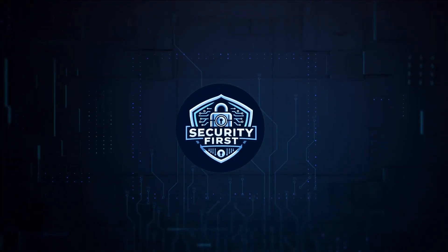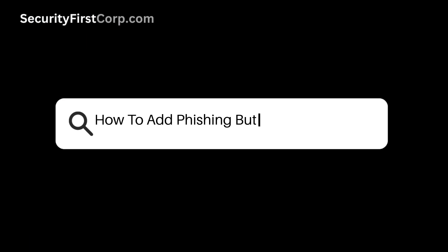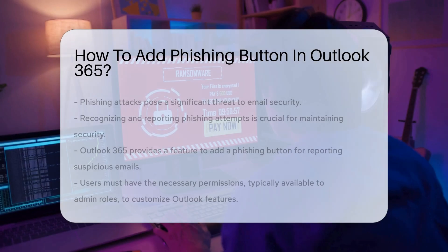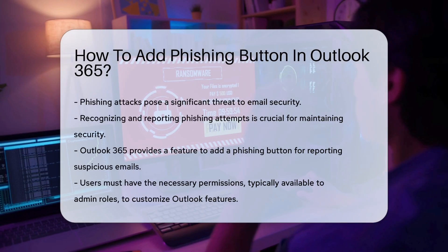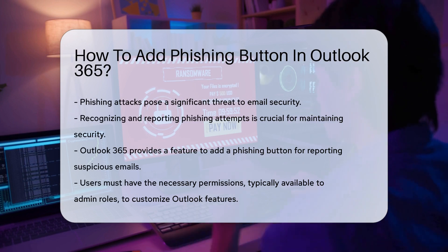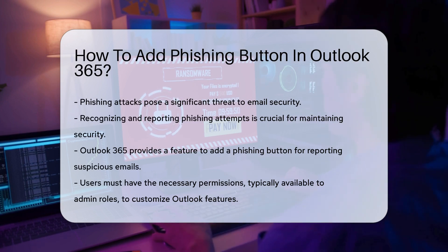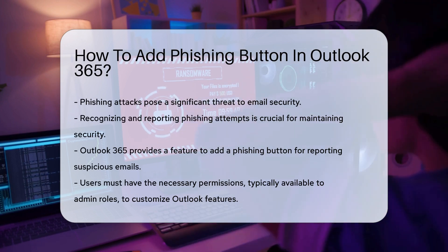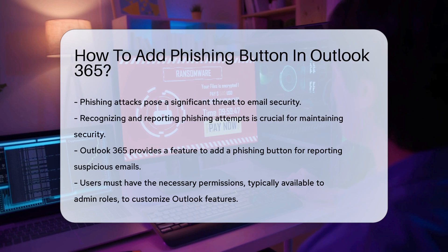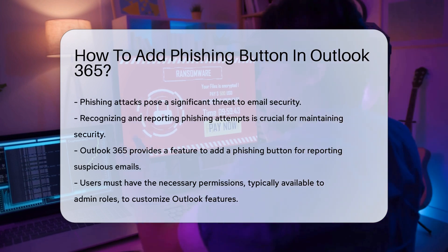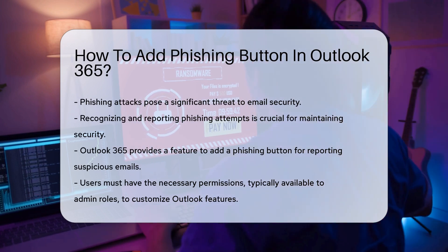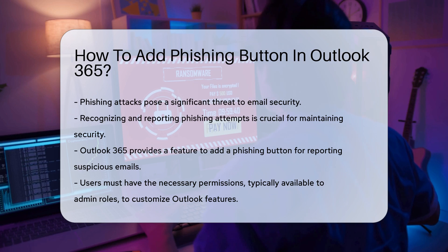Security First Corp — Safety Through Knowledge. How to add a phishing button in Outlook 365. Phishing attacks are a significant threat to email security. Recognizing and reporting these attacks is crucial for maintaining a secure environment. Outlook 365 offers a way to add a phishing button, enhancing user capability to report suspicious emails.